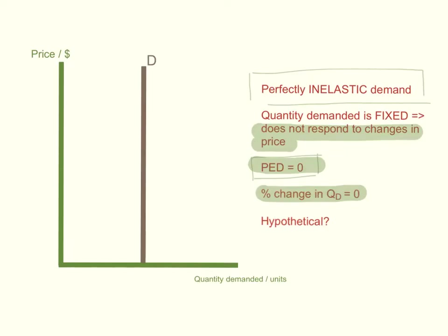Economists would say this product has perfectly inelastic demand — price elasticity of demand is equal to 0. The demand curve looks like a vertical straight line. If you draw any level of price, regardless of price changing, falling or rising, you will find that quantity demanded is fixed. It does not change. This is a case where the product has perfectly inelastic demand.